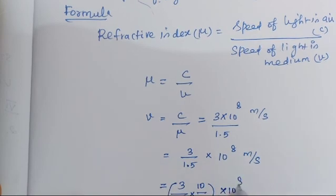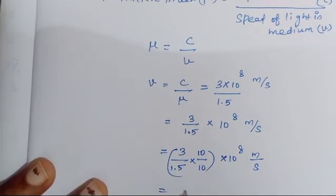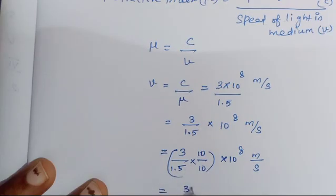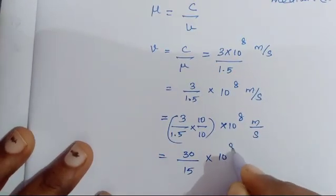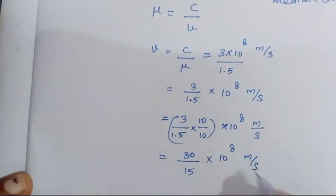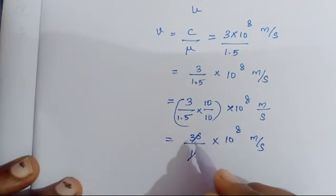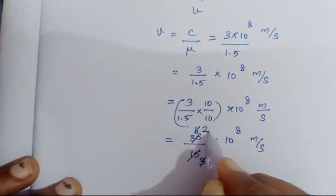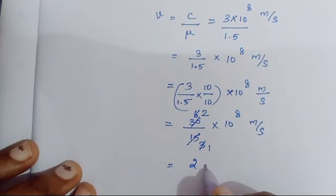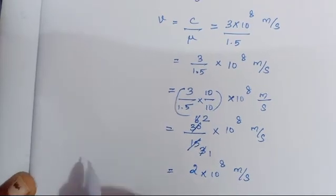This gives us 30 divided by 15, into 10 power 8 meter per second. The decimal point gets cancelled. Now, 30 divided by 15: 15 times 2 is 30, so the answer is 2. Therefore, the speed of light in medium is 2 into 10 power 8 meter per second.